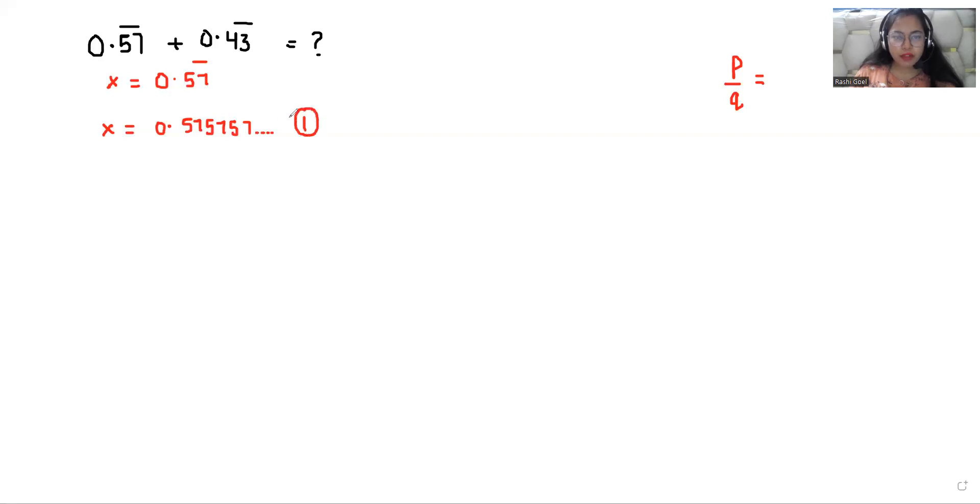I'll take it as equation number one. If I multiply equation one by 100, what I get? Here I get 100X and here 57 comes before the decimal and then 5757 and so on. This is equation number two.